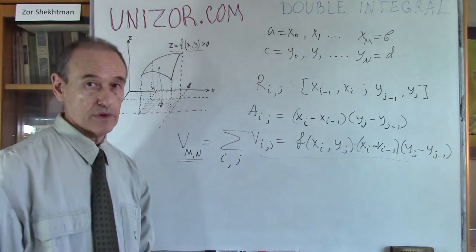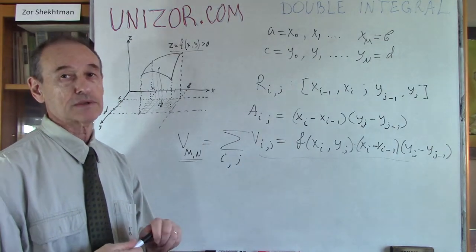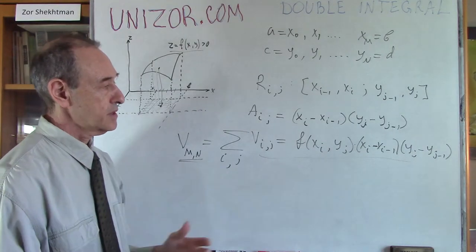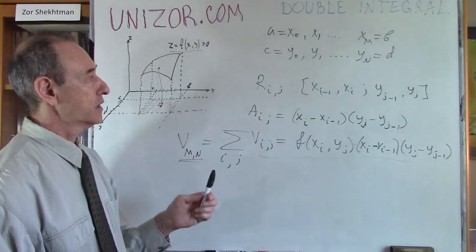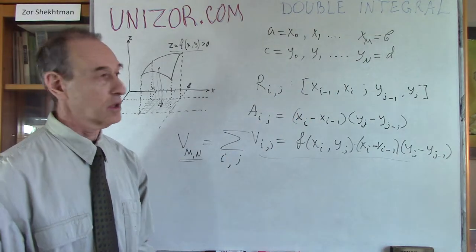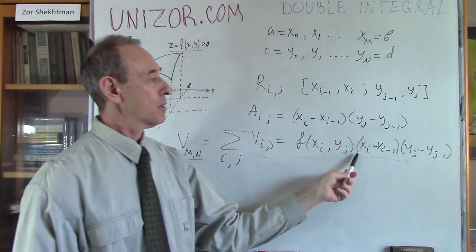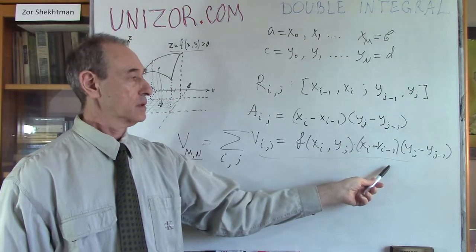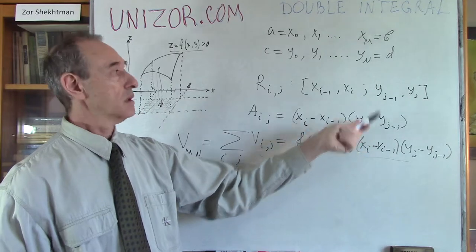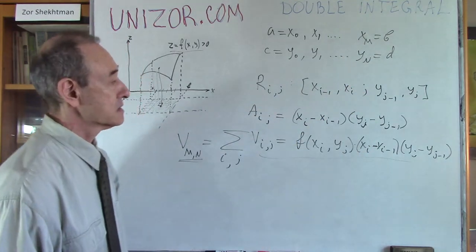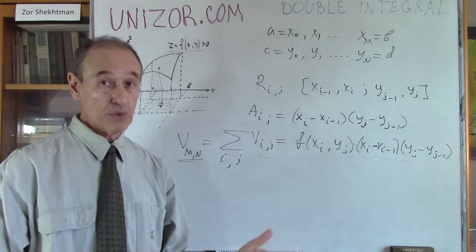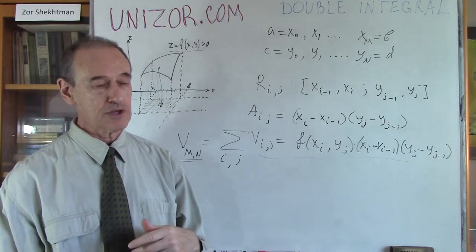If I increase m and n to infinity and simultaneously make these sub-rectangles smaller and smaller, there is a theorem — which I'm not going to prove, but it follows the same line as the two-dimensional case — stating that no matter how you divide your rectangle into smaller rectangles, as long as the maximum of (x_i − x_{i-1}) goes to zero and the maximum of (y_j − y_{j-1}) goes to zero, which means both m and n go to infinity...